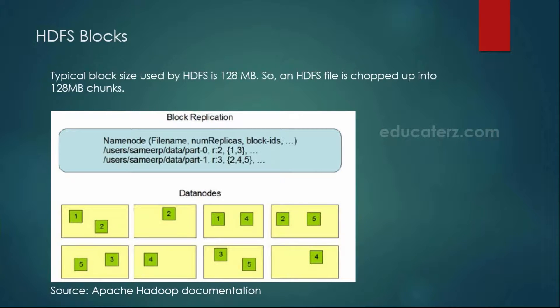HDFS blocks. By default, HDFS block size is 128 MB. Whatever file you are placing into your Hadoop cluster will get divided into blocks of 128 MB each. In older versions of Hadoop, the default block size was 64 MB. Using the DFS dot block size parameter, you can adjust your block size — increase it to 256 or 512 based on your scenarios. I will show you where to modify the block size after we complete the setup.